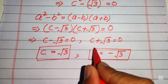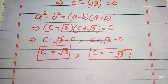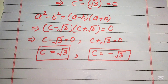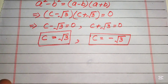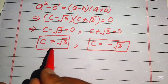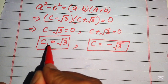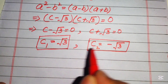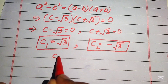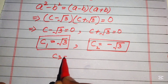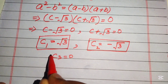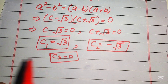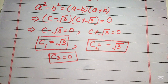So we have three roots: c₁ equals square root of three, c₂ equals minus square root of three, and c₃ equals zero.